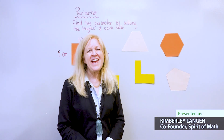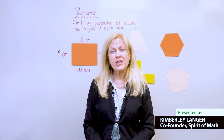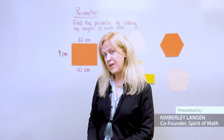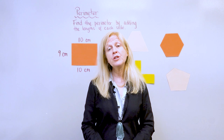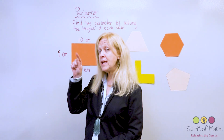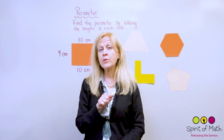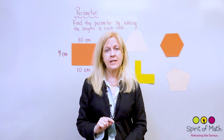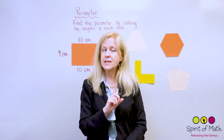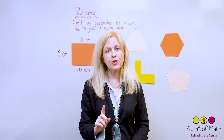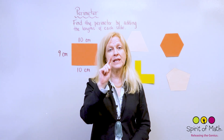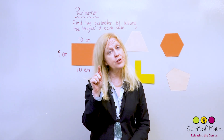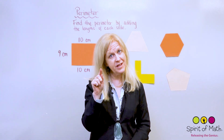Hi, everybody. Today we're going to look at perimeter. The perimeter is the length around a shape, and every shape except for a circle — because the length around the circle is called a circumference.